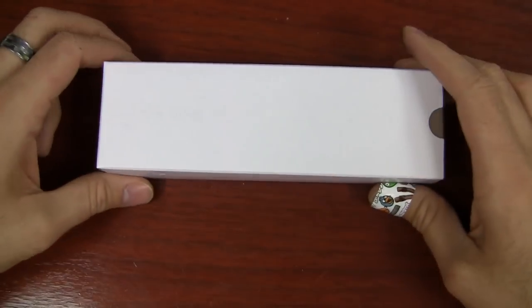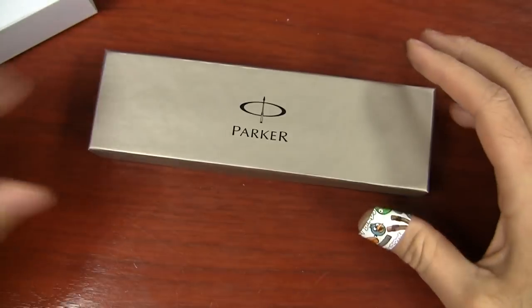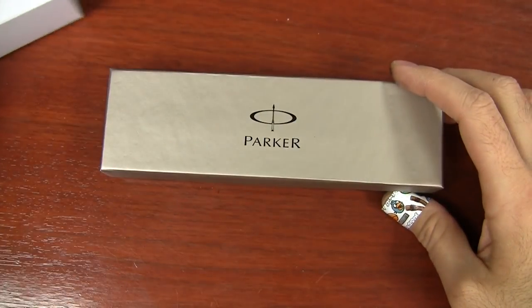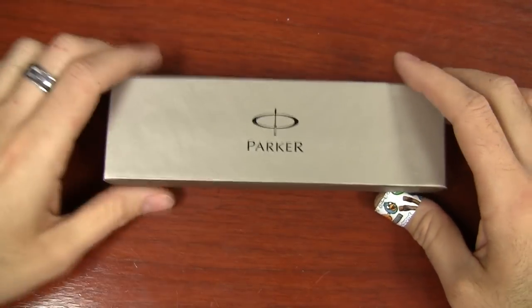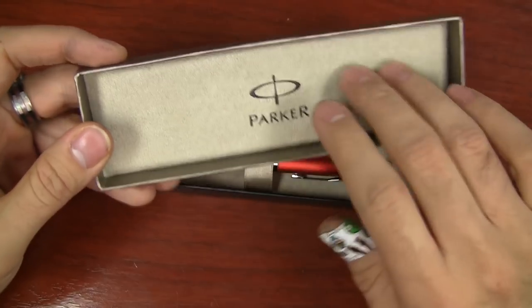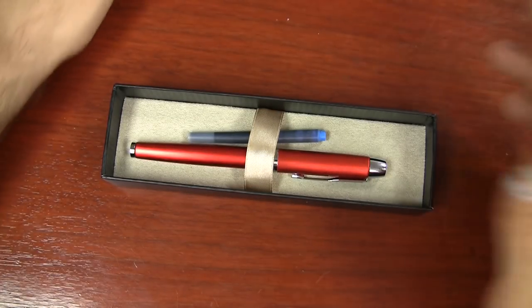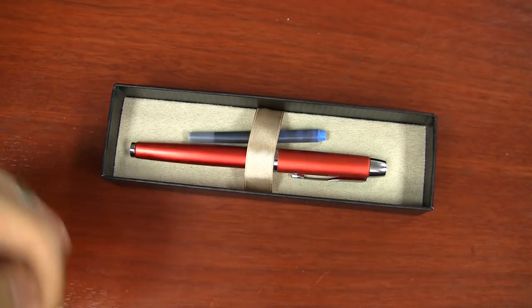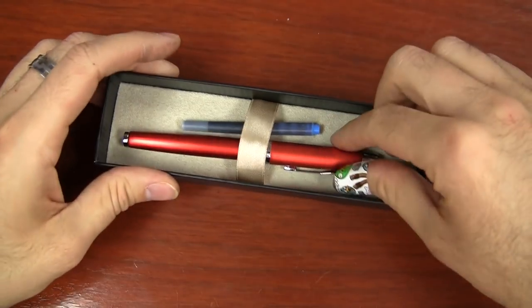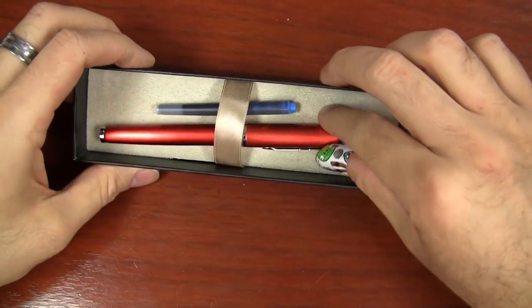This here is the packaging for the Parker IM. Slide it out. It's got the same box that you might have seen in some of the other Parkers, like the Urban one. You open it up and it's got this nice Parker logo here and kind of this fabric backing. It looks a little classy. For pens of this price range, it's kind of hit or miss whether you're going to get a decent box, but this one's nice and sturdy. Really looks nice. Parker did a good job with this.